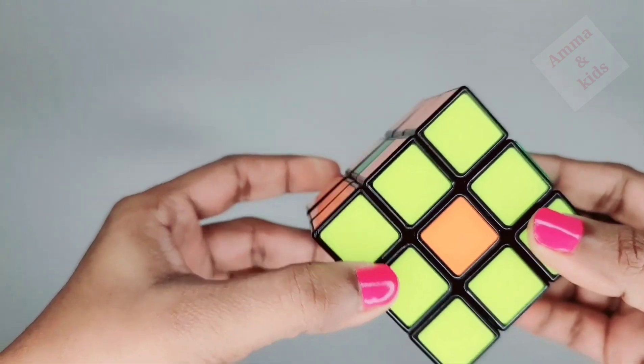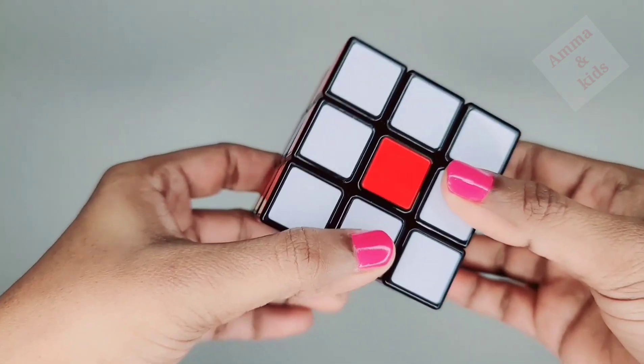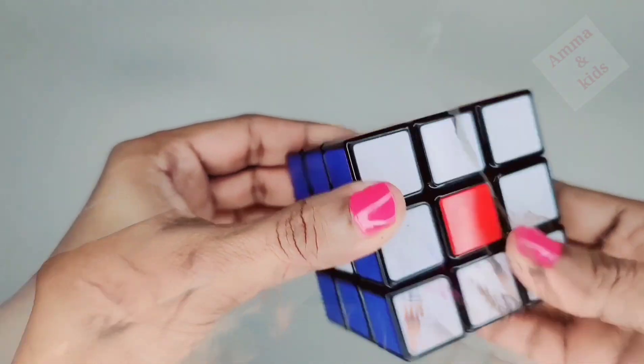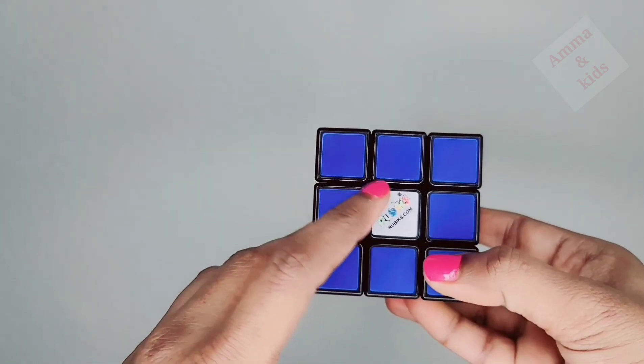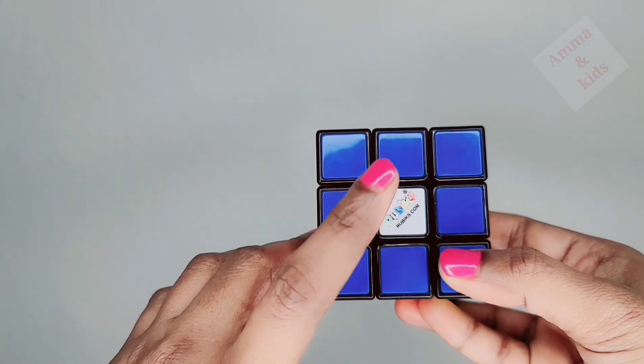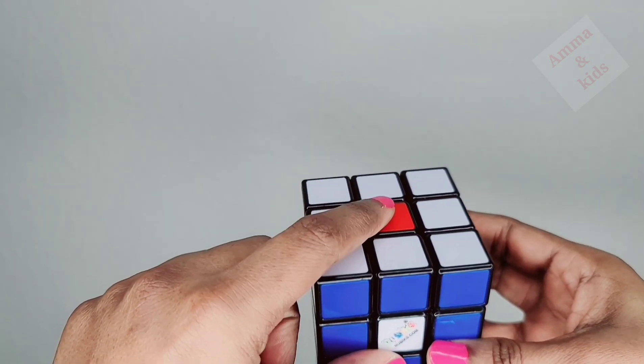If we take any side, then we can't get back to the original Rubik's cube. That's what I was speaking about earlier. So which side should you take? You should take in such a way that the left center should come to the front, the front center should come to the top center, and the top center should come to the left center.